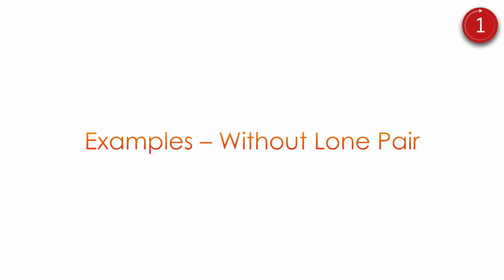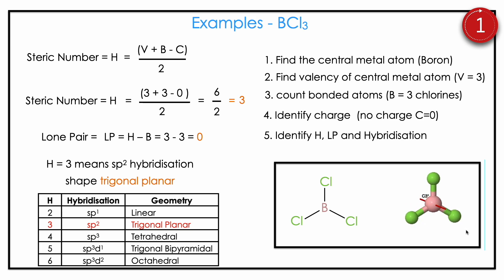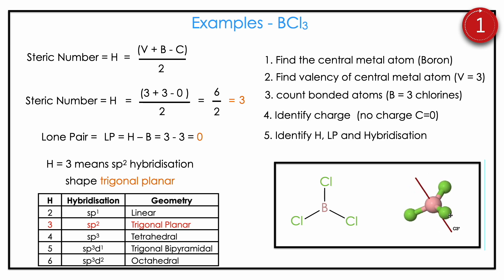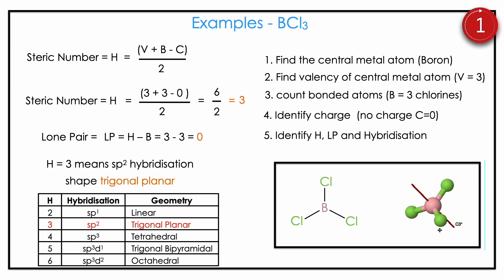First type: examples without lone pair. Boron trichloride — central metal atom is boron, valence is 3 (because p1, s2). Bonded atom is chlorine, which is 3. No charge. Applying the H formula: (3 + 3 − 0) / 2 = 6 / 2 = 3. Lone pair = H − B = 3 − 3 = 0. H = 3 means sp2 hybridization and trigonal planar shape. Since lone pair is zero, both geometry and shape are the same — trigonal planar.